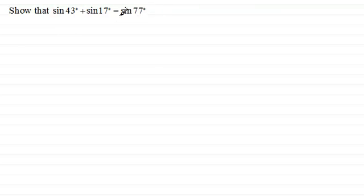So what I'm going to do is start with the right hand side and when I was looking at this I wanted to see how I could get 43 and 17 involved in the 77 degrees. Well clearly 43 plus 17 degrees is 60 degrees and doing the sine or cosine of 60 degrees is a well known value.